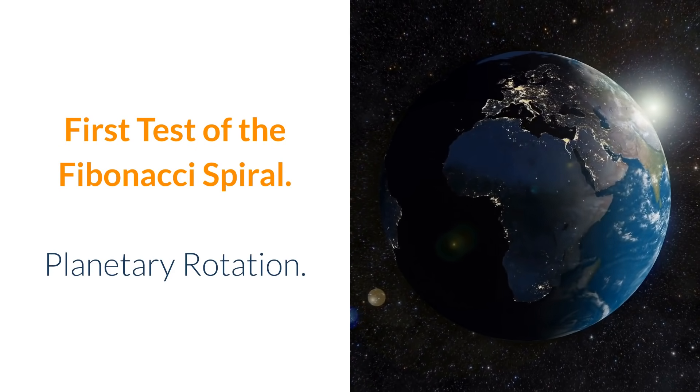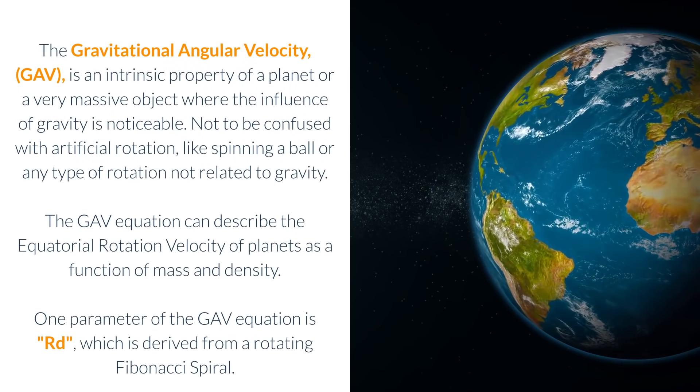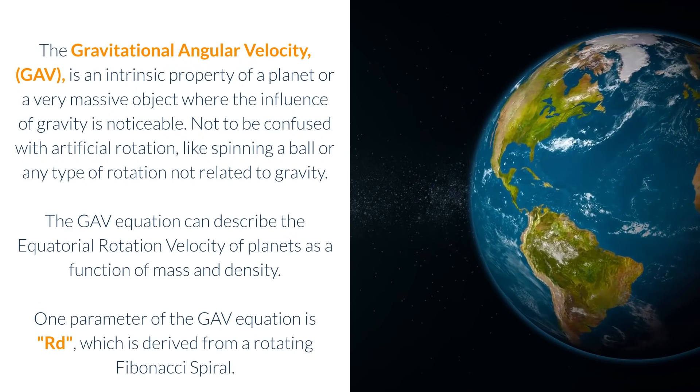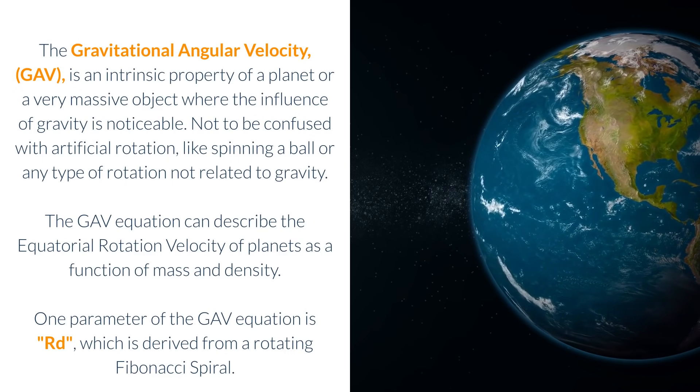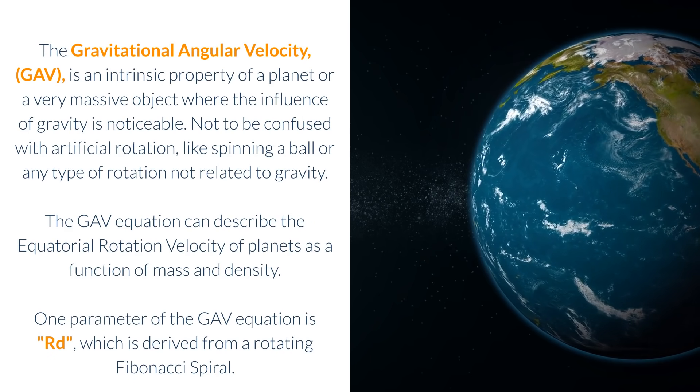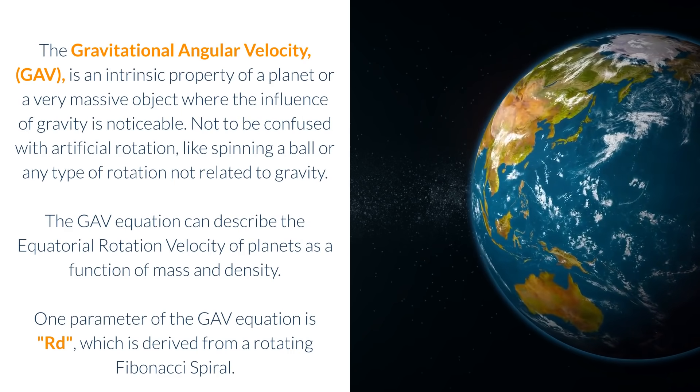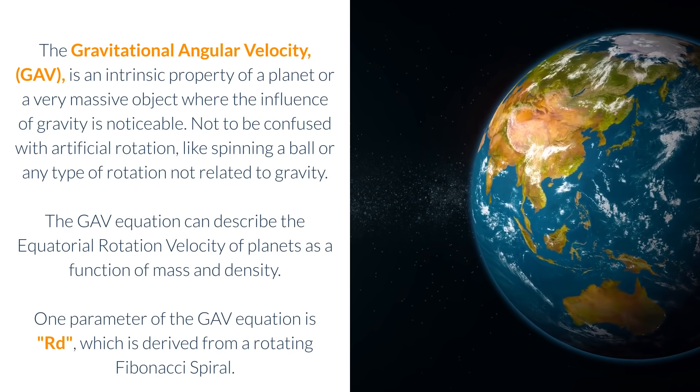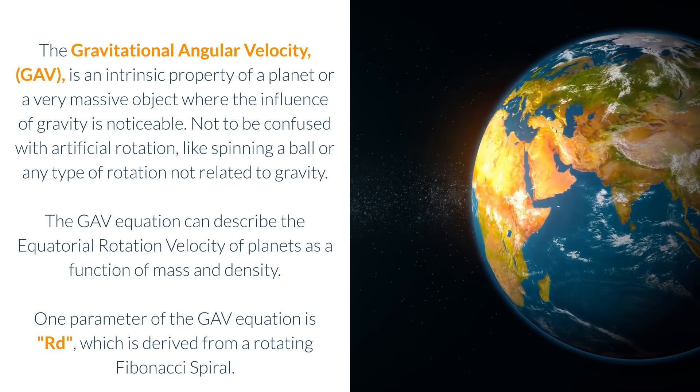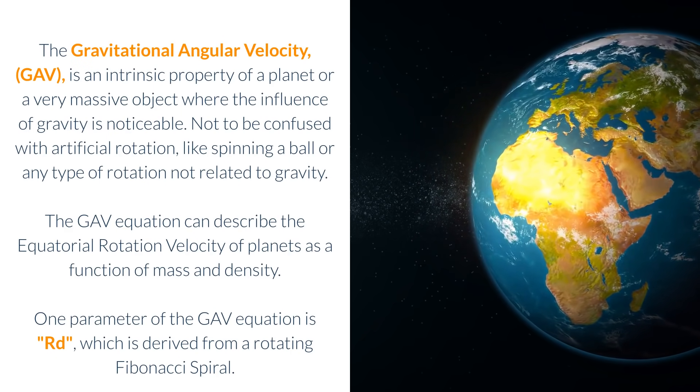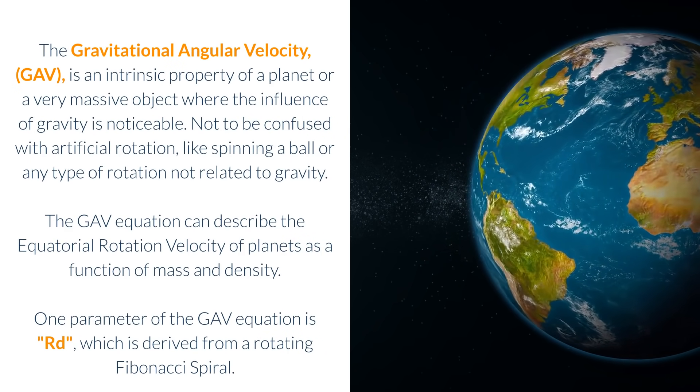Gravitational angular velocity, GAV. The gravitational angular velocity, GAV, is an intrinsic property of a planet or a very massive object where the influence of gravity is noticeable. Not to be confused with artificial rotation, like spinning a ball or any type of rotation not related to gravity. The GAV equation can describe the equatorial rotation velocity of planets as a function of mass and density. One parameter of the GAV equation is Rd, which is derived from a rotating Fibonacci spiral.